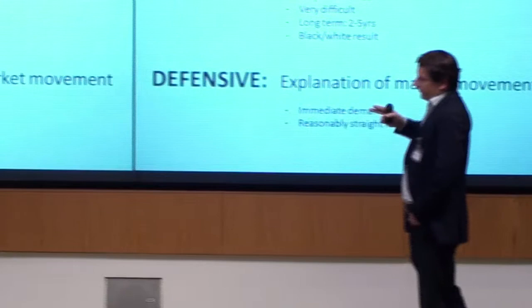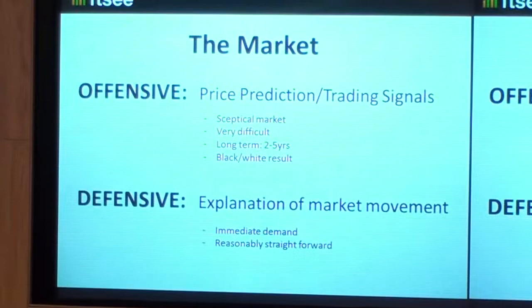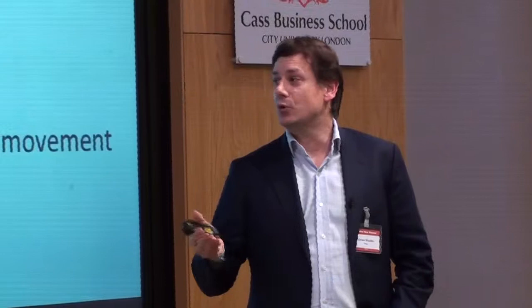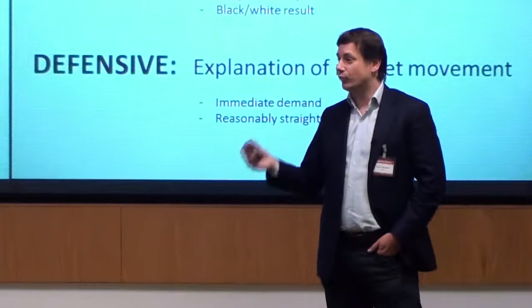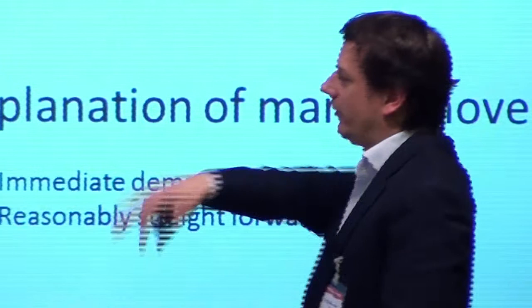So that was the first mistake — we spent about six months going down that path before we changed tack. The second mistake was the problem we were actually solving. We think you can use the data in two ways: one is you effectively explain market movement — something happens to price, you're looking at social data to understand why your stock price moved. And that's a pretty easy sell. People already have a position, they want to know, and it's pretty well accepted that stuff happens on Twitter before it even happens on Bloomberg and Reuters, and they're willing to pay for that.